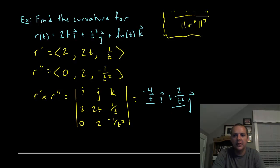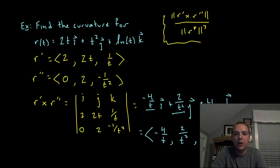And then lastly the k-th component, delete the row and column k is in, and you just get 4 minus 0. So that would be plus 4. That would be negative 4 over t, comma 2 over t squared, comma 4, written in component form. So there's r prime cross r double prime.